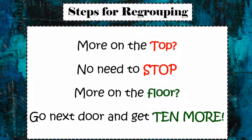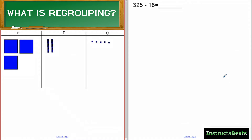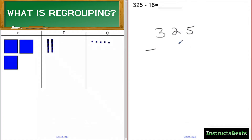Let's take a look at what regrouping actually means, because to really understand what regrouping across the zero is doing, we have to understand what regrouping is. I'm going to start with 325 and set that up in my HTO chart — I have three hundreds, two tens, and five ones. Setting this up in standard algorithm so we can follow along.